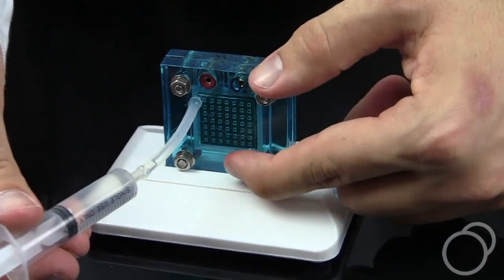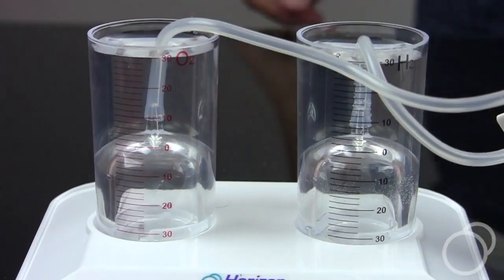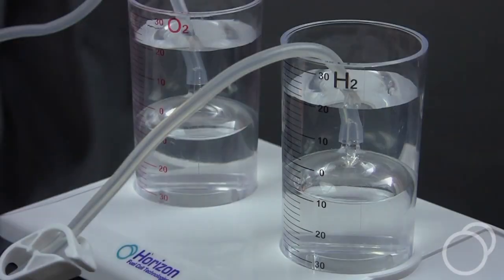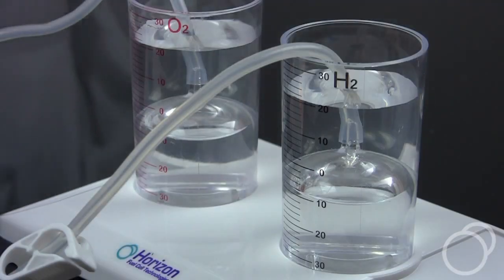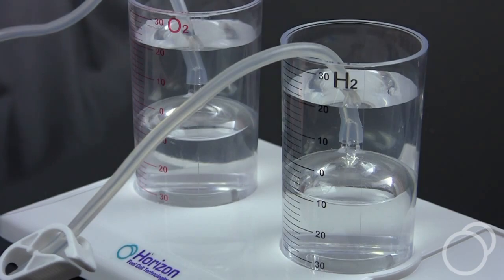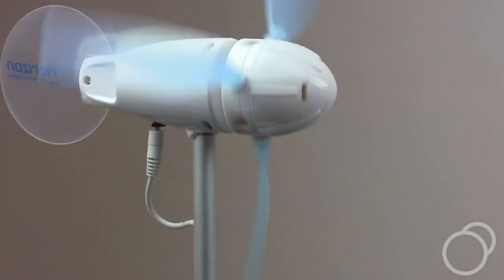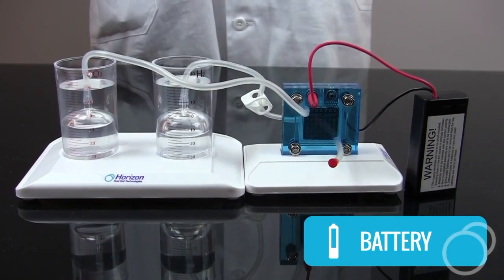After being filled with distilled water, the reversible fuel cell can use an electric current to split that water into hydrogen and oxygen, storing them safely in two cylinders. The wind turbine can be used to provide that current or the included battery pack.